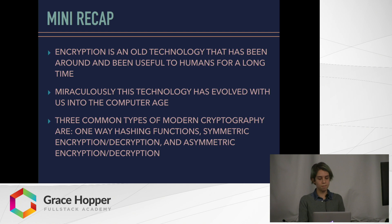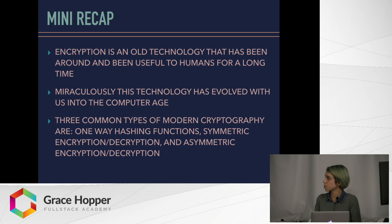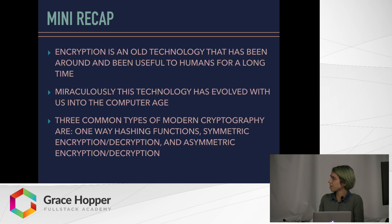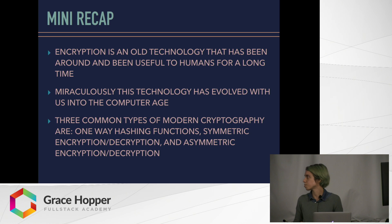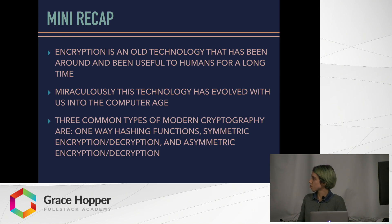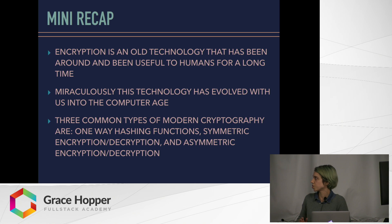Mini recap: Encryption is an old technology that's been around and useful to humans for a long time, and miraculously it's a technology that has evolved with us into the computer age. Three common types of modern cryptography — and note I say cryptography here, not encryption — are: one-way hashing functions for data storage, symmetric encryption-decryption best used over networks that you know are secure, and asymmetric encryption-decryption.